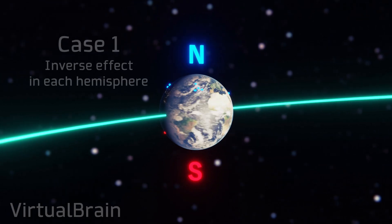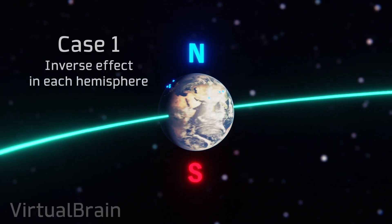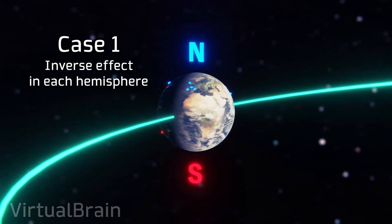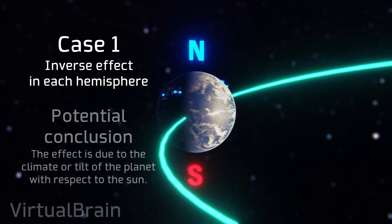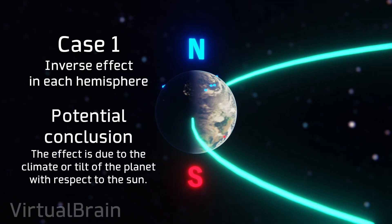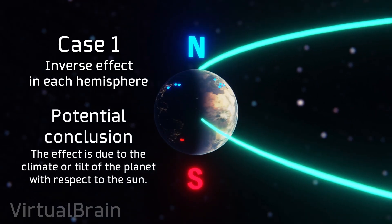If the detector in one hemisphere is affected inversely to the one in the other hemisphere, that is, while one increases its activity the other decreases, we could say with greater certainty that the effect is due to the climate of each region and the tilt of the planet with respect to the sun.